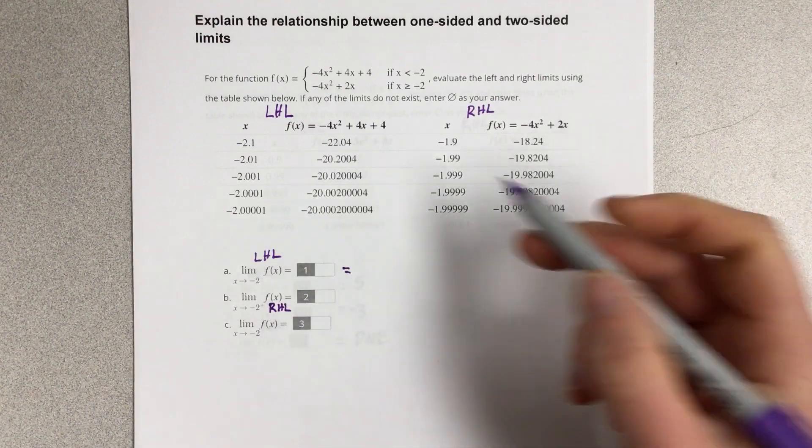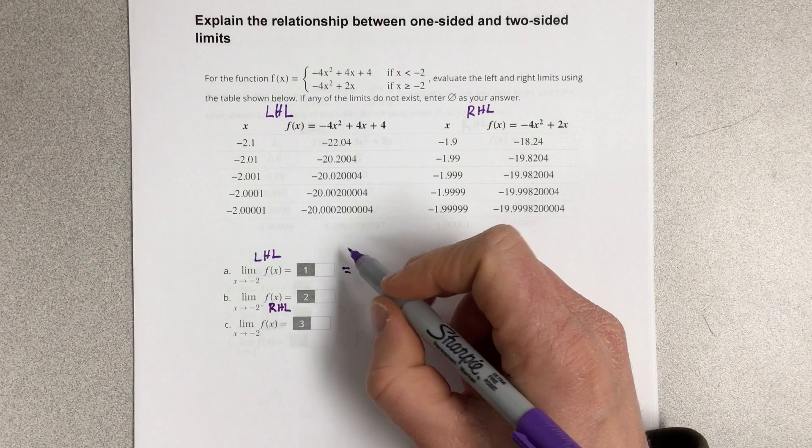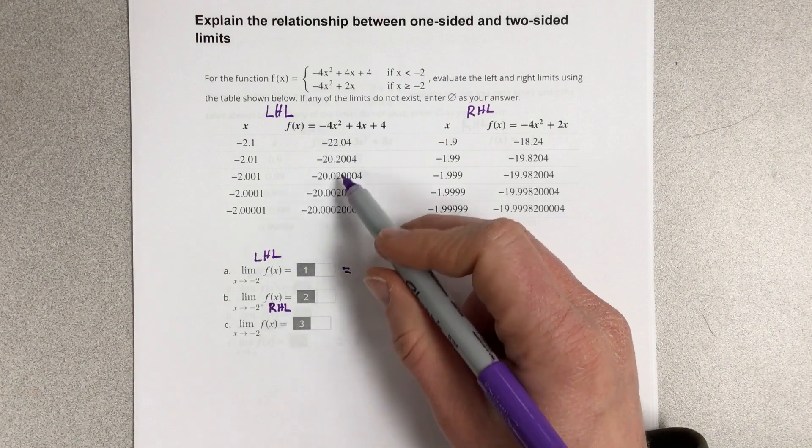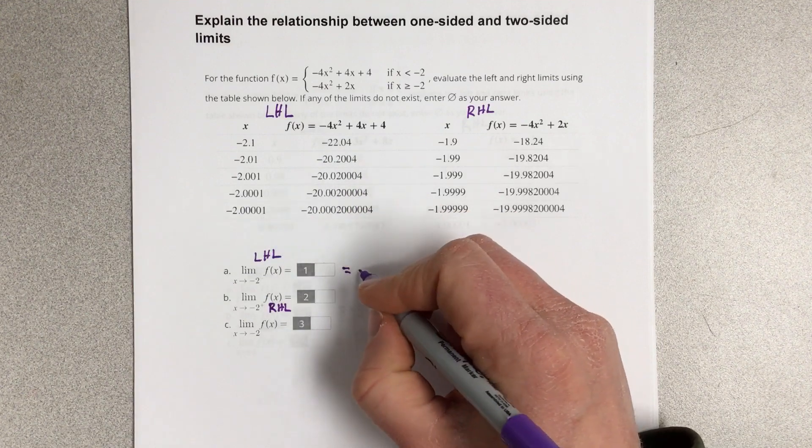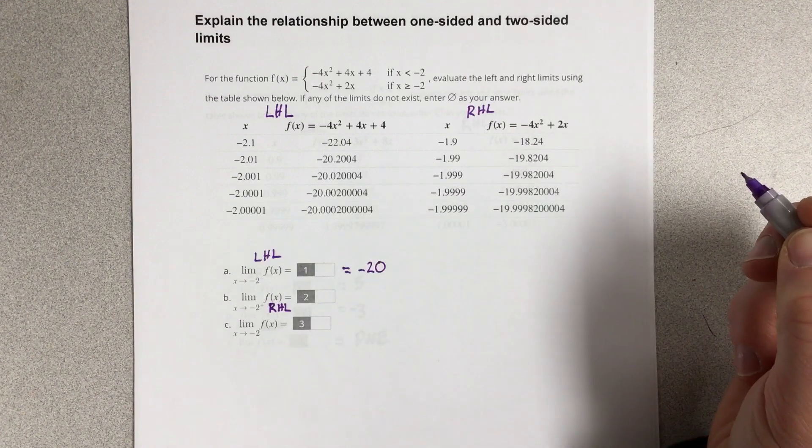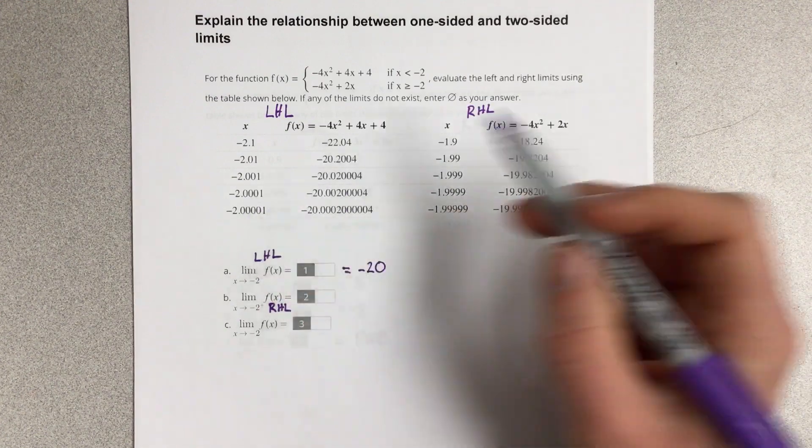And the left-hand limit is equal to negative 20, because we're getting closer and closer to negative 20 as we increase the x value, because this is the left-hand limit.